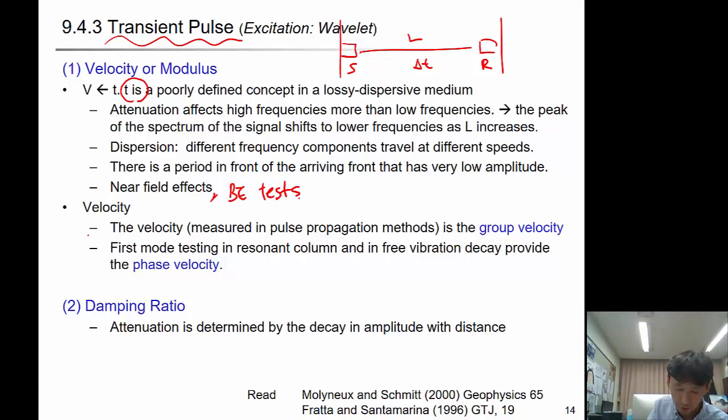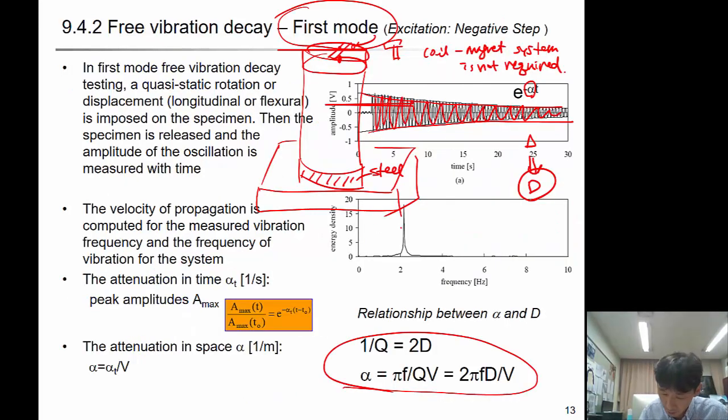When you measure the velocity using pulse propagation method, you apply this kind of step signal and the received signal will be like this, and picking up the arrival time will give you the group velocity. First mode testing in resonant column and free vibration decay provides phase velocity, because you will have a certain frequency band. For example, the frequency band is very narrow, like 2 to 3 hertz or 1 to 3 hertz. The velocity determined here represents the phase velocity at the frequency of 1 to 3 hertz.